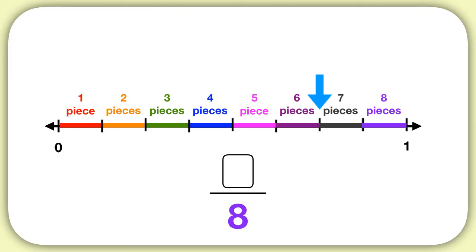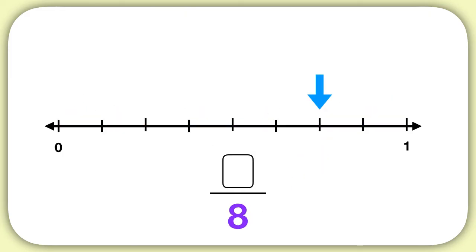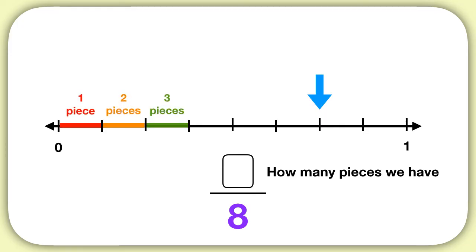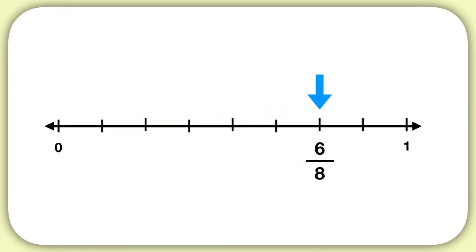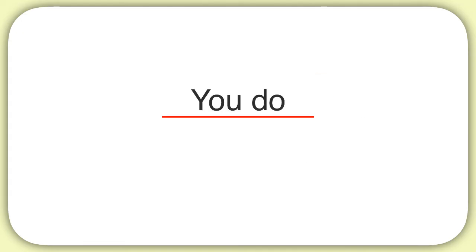Now what should the numerator of my fraction be? Remember, the numerator is how many pieces we have, so we count the pieces until we reach our arrow. We can count 1, 2, 3, 4, 5, 6 pieces. The numerator is 6. And so this dash represents the fraction 6 eighths. Now it's time for you to practice some of these on your own.